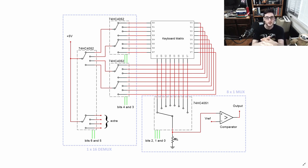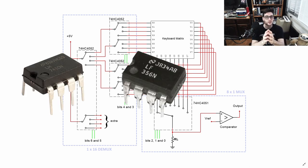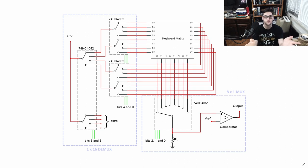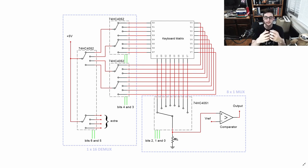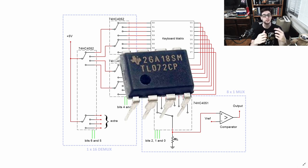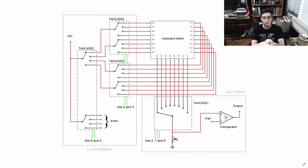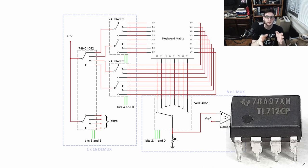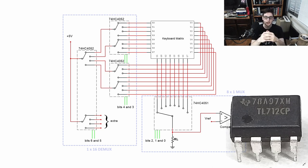I needed to decide which comparator to use. I tested the LM741 and LM357 — both I had at home — but they didn't work with 0 to 5V as they need a negative supply rail. I then tested the TL072, which worked but was too slow for the switching speeds I needed. So I got a proper dedicated comparator, the TL712. This one compares over a wide range, is almost rail-to-rail, and is super fast.